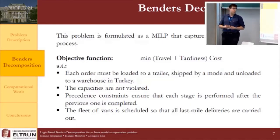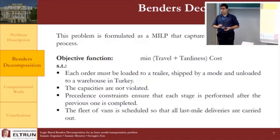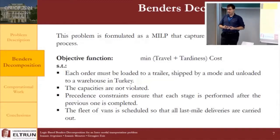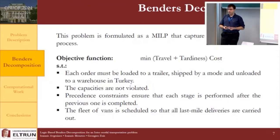Due to time restrictions, I will describe the formulation briefly. The objective function minimizes all travel and tardiness costs. Constraints ensure each order is loaded to a trailer, shipped by a mode, and unloaded to a warehouse in Turkey, and trailer capacities are not violated. Precedence constraints ensure each stage is performed after the previous one is completed. For the last-mile delivery stage, the fleet of vans in each warehouse must be scheduled so all orders are delivered to their final destination.